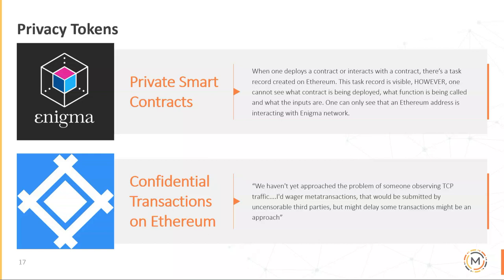I also want to talk about Ethereum privacy tokens — specifically what Enigma and Aztec Protocol are looking to leverage. Enigma aims to leverage private smart contracts, making sure anything inside the smart contract is not openly visible. The issue with Enigma is that you can still get network metadata showing that this address is using a private smart contract — you can't tell what's going on inside, but you can glean that they are using it. Aztec Protocol suffers a similar fate: they're looking to do confidential transactions over Ethereum, but you can still tell they are performing private transactions on the chain.